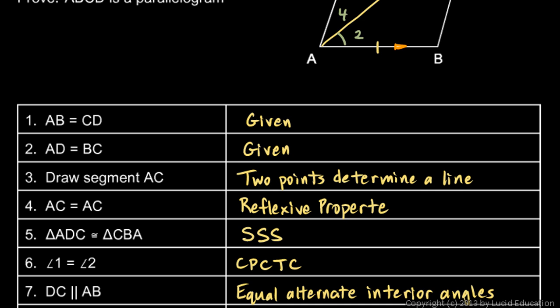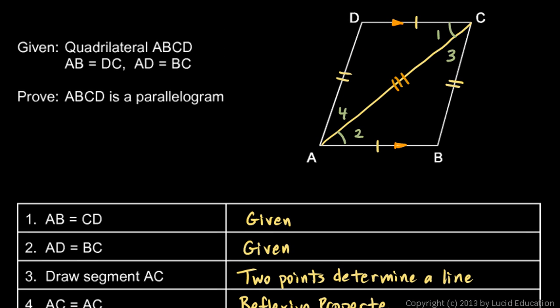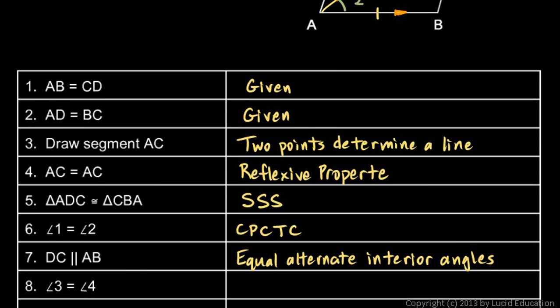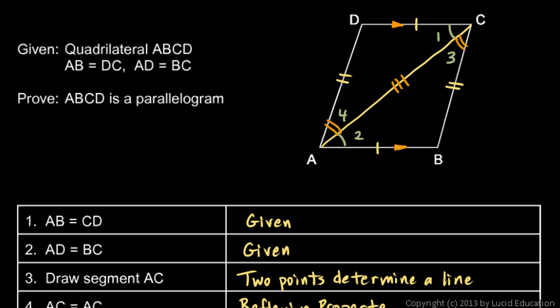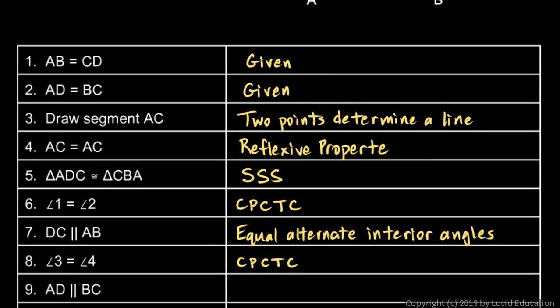The next step uses similar reasoning with the other angles. Angle 3 must equal angle 4 — those are also equal because corresponding parts of congruent triangles are congruent. And if those are equal, then these other lines must be parallel: AD must be parallel to BC. Let's mark this with a double arrowhead to distinguish it from the earlier one. AD is parallel to BC because equal alternate interior angles mean that the lines are parallel.